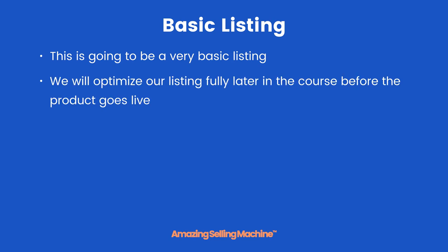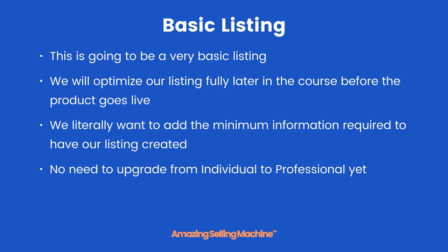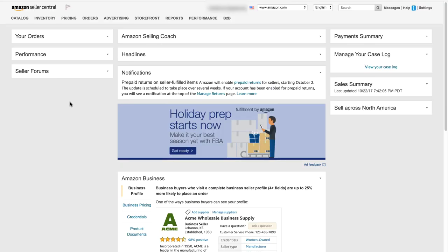This is going to be a very basic listing — we will optimize our listing fully later in the course before the product goes live. We literally want to add the minimum information required to have our listing created. There is no need to upgrade from individual to professional yet, however we do recommend you upgrade to professional before you order your inventory.